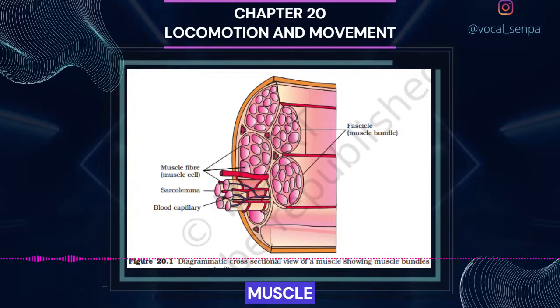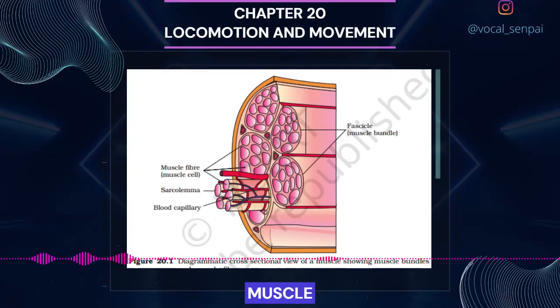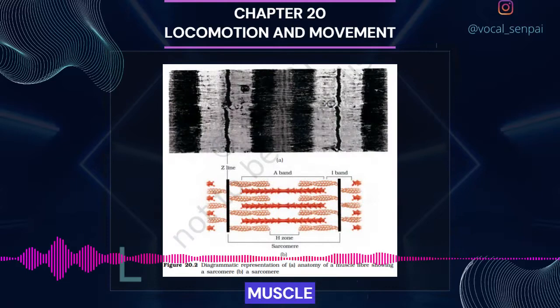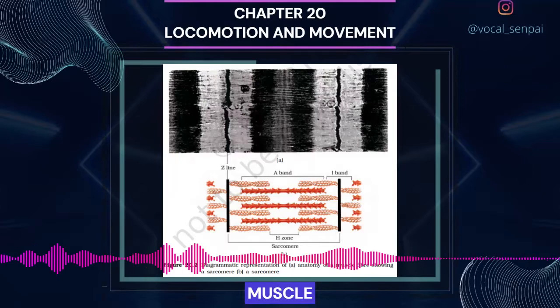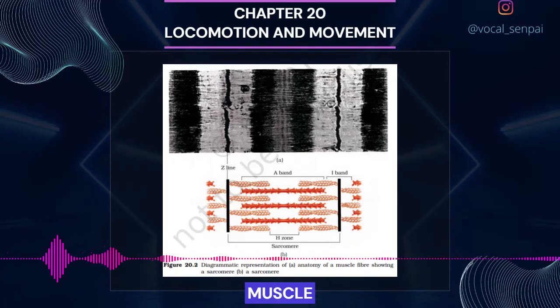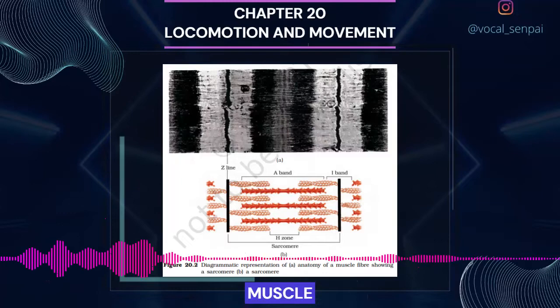Let us examine a skeletal muscle in detail to understand the structure and mechanism of contraction. Each organized skeletal muscle in our body is made of a number of muscle bundles or fascicles held together by a common collagenous connective tissue layer called fascia. Each muscle bundle contains a number of muscle fibers. Each muscle fiber is lined by the plasma membrane called sarcolemma enclosing the sarcoplasm. Muscle fiber is a syncytium as the sarcoplasm contains many nuclei. The sarcoplasmic reticulum of the muscle fiber is the storehouse of calcium ions. A characteristic feature of the muscle fiber is the presence of a large number of parallelly arranged filaments in the sarcoplasm called myofilaments or myofibrils.